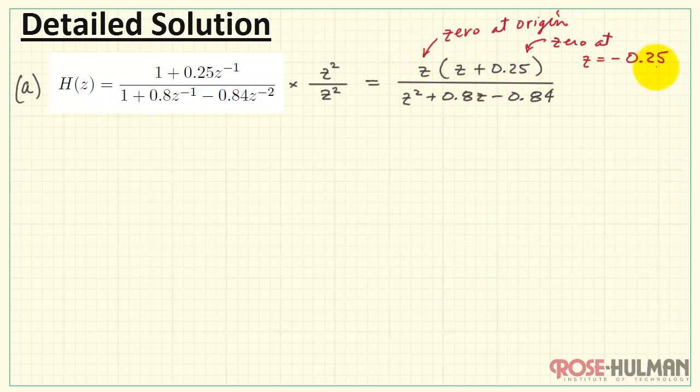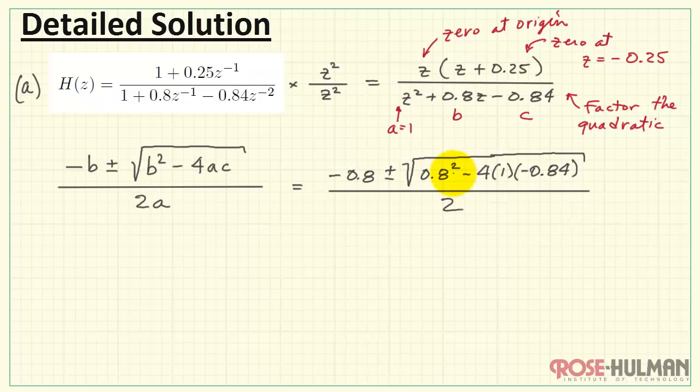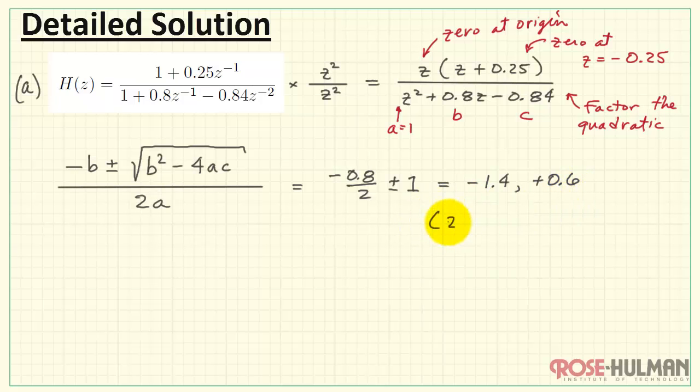We see that we have a zero at the origin and a zero at z equals minus 0.25. We need to factor this quadratic polynomial before we can identify the poles. So I've written the familiar quadratic equation for the roots. Here I'm identifying my coefficients a, b, and c. This is 0.64. And punching this out on the calculator gives me 3.36. We have 4. That gives us 2. Let's go ahead and divide through by 2. And this gives us the two roots minus 1.4 and positive 0.6. We would then write the denominator as z plus 1.4 times z minus 0.6.